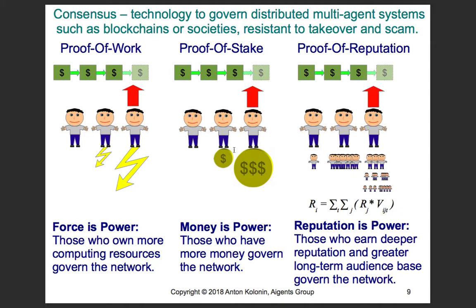Proof of stake is similar to the current organization of capitalist society, with its obvious drawback that the richer become richer and the poorer become poorer. What we are looking for is a better form of consensus called proof of reputation, where the value of an agent is computed on the basis of reputation earned in their interactions with peers over time, with account of the reputation of those peers themselves — hierarchically building a reputation tree from bottom to top.